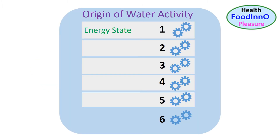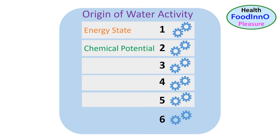Water activity indicates the energy state of water in a food and it is related to the chemical potential of water. Foods are then equilibrated with atmospheric air, and at equilibrium the chemical potentials of water in food and air are equal.